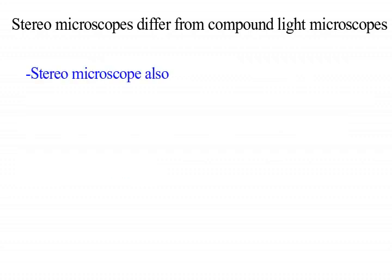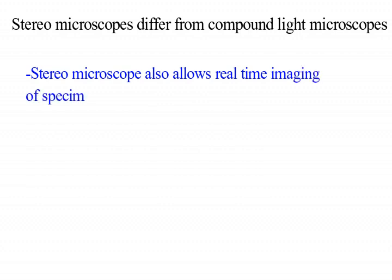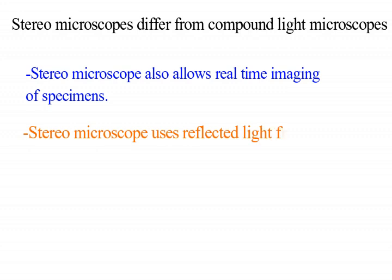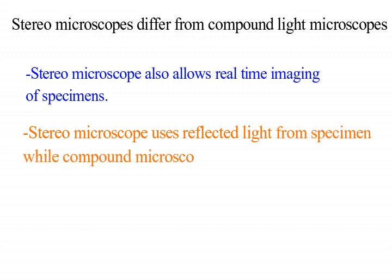Stereomicroscopes also allow real-time imaging of specimens. They use reflected light from the specimen, while compound microscopes use transmitted light.